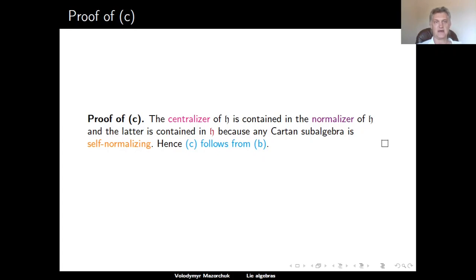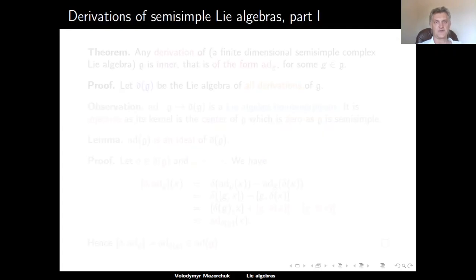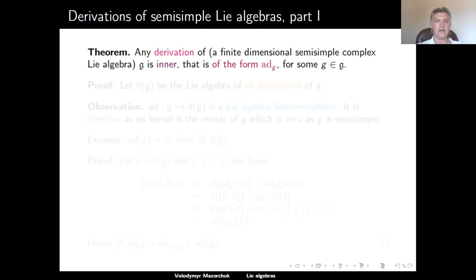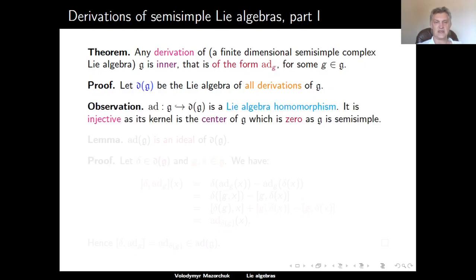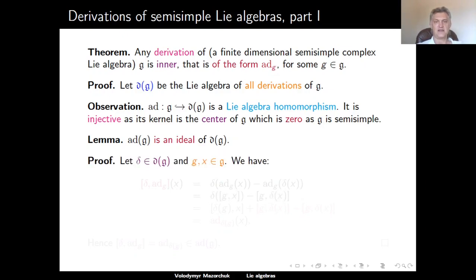Now we move to the proof of Part D, the most difficult part, which requires a detour on derivations of semi-simple Lie algebras. The claim is: any derivation of a finite-dimensional semi-simple complex Lie algebra G is inner — that is, it has the form ad G for some element G in G. We denote by D(G) the Lie algebra of all derivations of G. The adjoint representation realizes G as a subalgebra of D(G), and since G has no centre the adjoint representation is injective. We claim that this subalgebra is in fact an ideal of D(G). To prove this, fix a derivation delta and let G and X be two elements in G; we want to compute the commutator of delta and the adjoint operator of G acting on X.